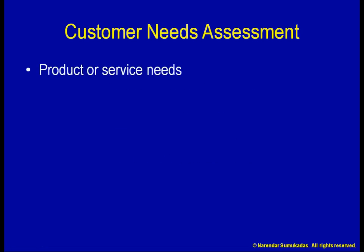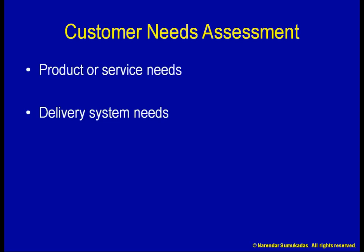A basic set of customers' needs are the product or service needs. These needs include a certain set of expectations about the features of the product or service, the quality, the amount of customization or variety, the price range, etc. In addition, delivery system needs deal with the manner in which customers want to interact with our system to receive the product or service. These needs could include delivery options, as well as location of our facilities, hours of operation, convenience of access, etc.